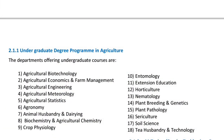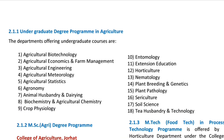First, I will cover the undergraduate degrees. The subjects offered are: Agricultural Biotechnology, Agricultural Economics and Farm Management, Agricultural Engineering, Agricultural Meteorology, Agricultural Statistics, Agronomy, Animal Husbandry and Dairying, Biochemistry and Agricultural Chemistry, Crop Physiology, Entomology, Extension Education, Horticulture, Nematology, Plant Breeding and Genetics, Plant Pathology, Sericulture, Soil Science, and Tea Husbandry and Technology.